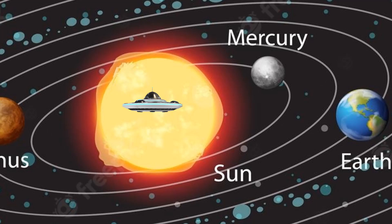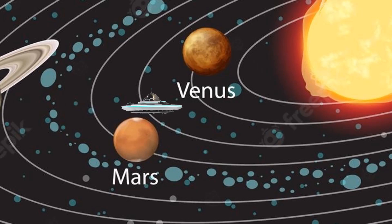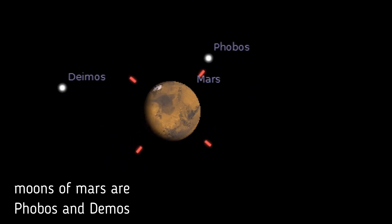Then, we will proceed to the fourth planet from the Sun, which is Mars. Mars is also known as the red planet. It has two moons, Phobos and Deimos.